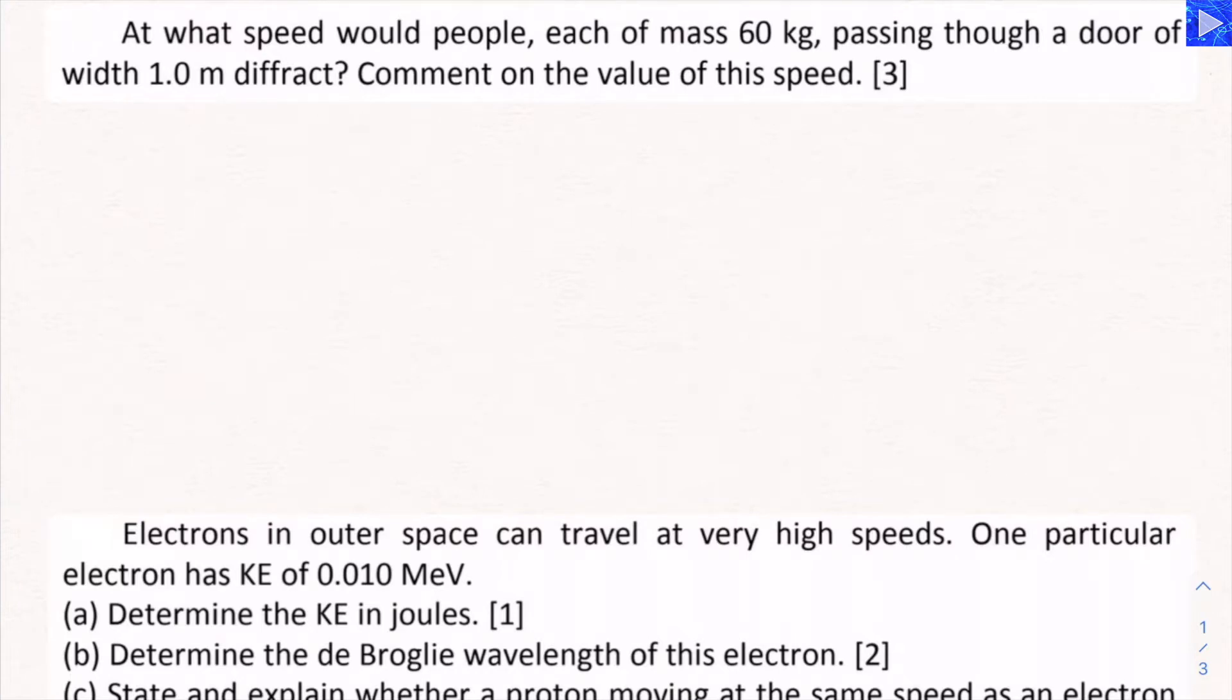At what speed would people, each of mass 60 kilograms, passing through a door of width one meter, diffract? Comment on the value of this speed.